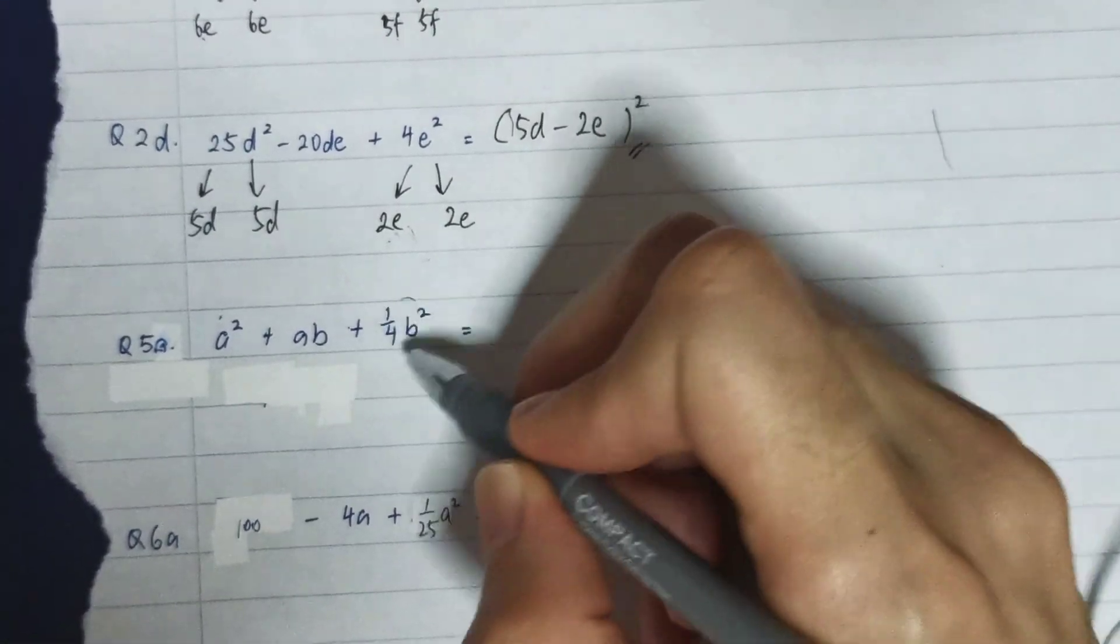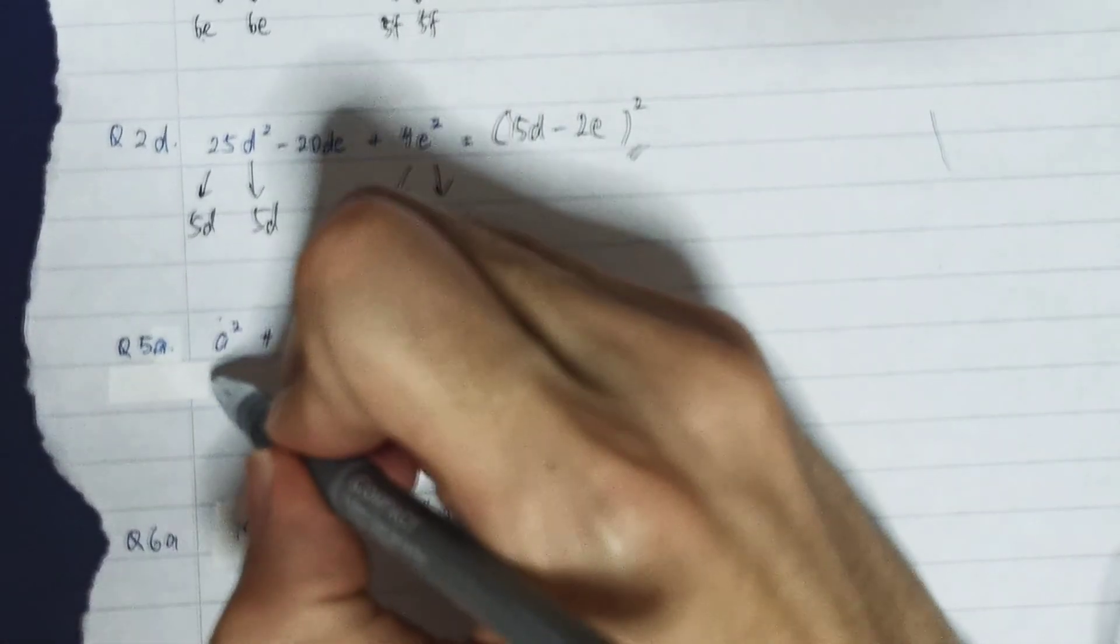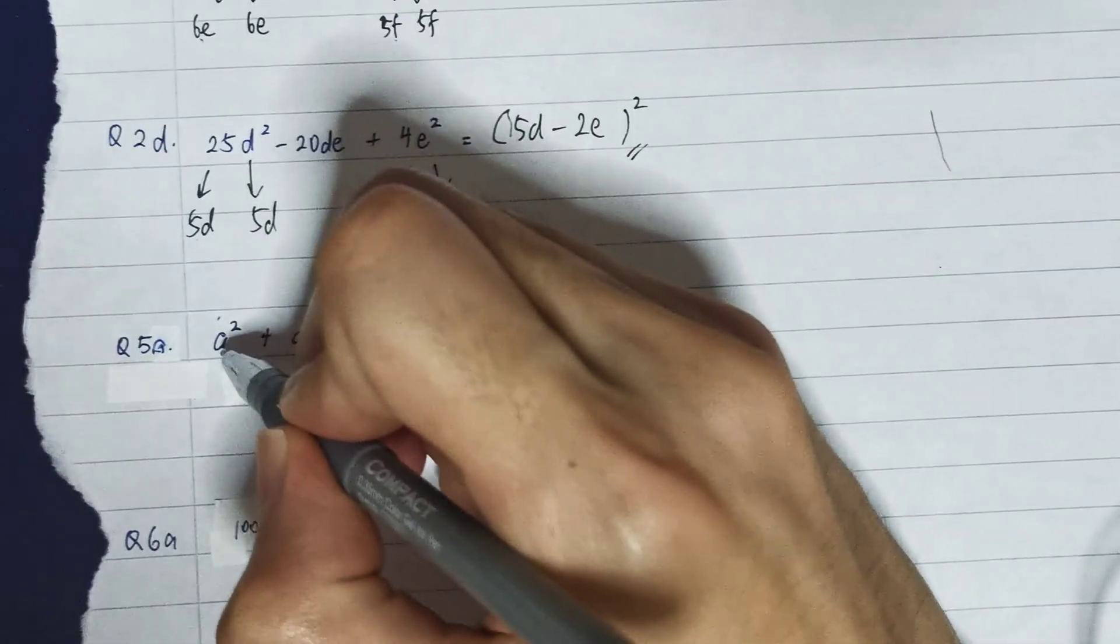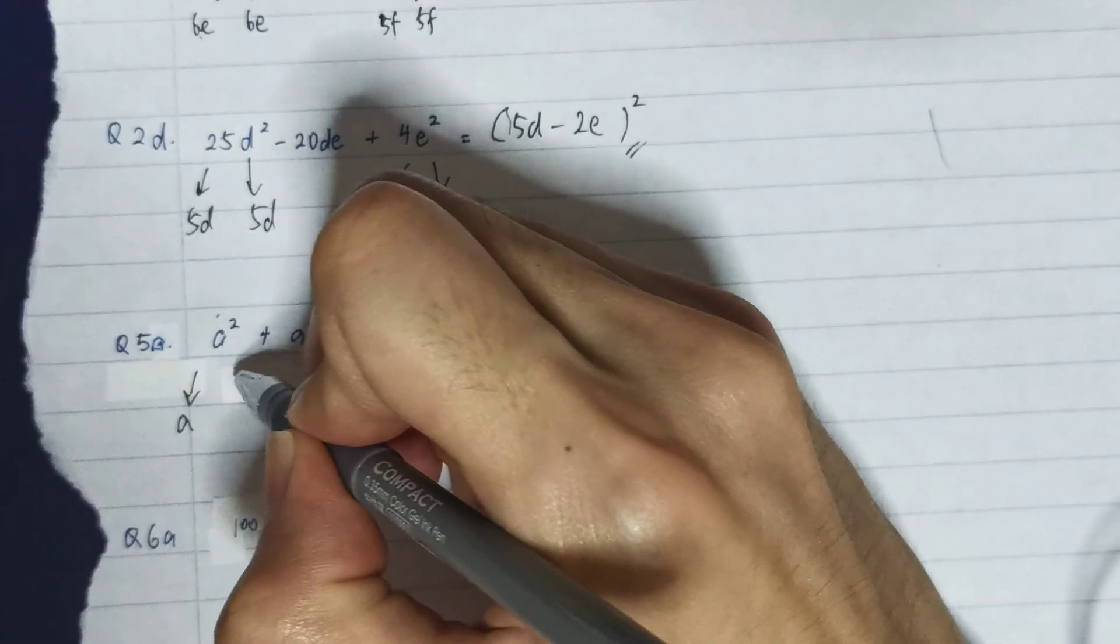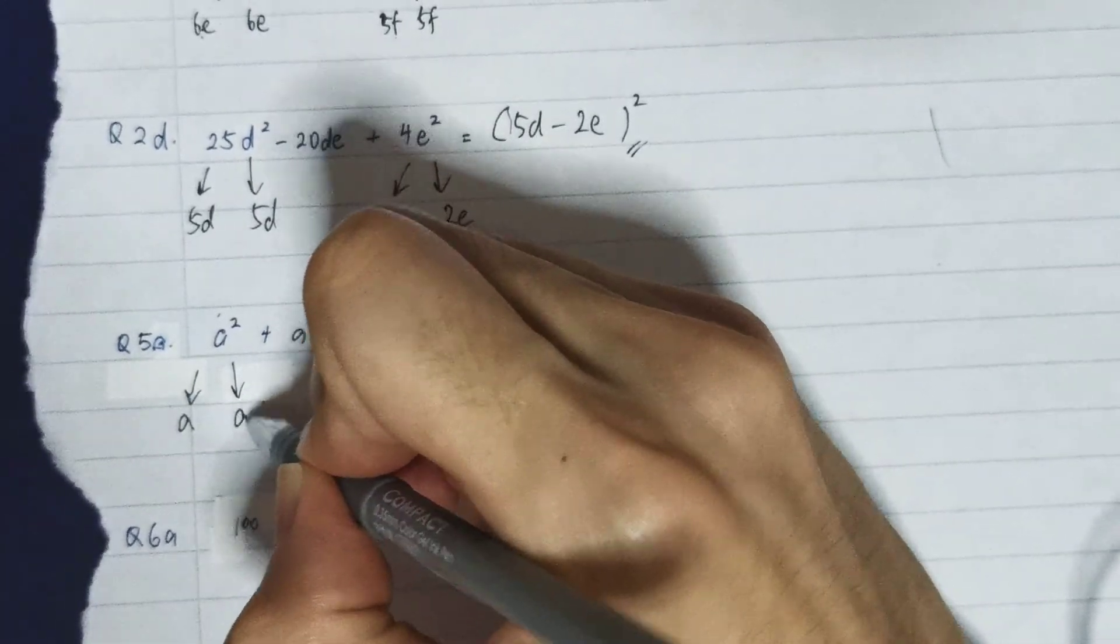So when we square root a², it will be a. So I know that a times a gives me a². And for ¼, I know that it's made of ½ times ½ times ½.